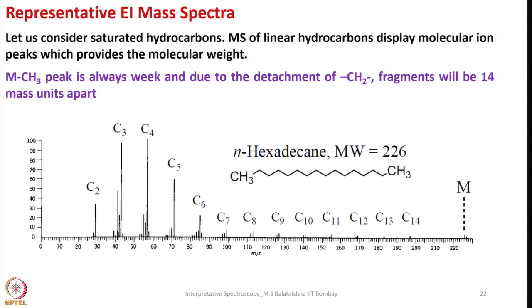Let me show you some representative, important, and simple examples to understand mass spectra of various molecules having different types of functionalities. Let us first consider saturated hydrocarbons. Mass spectra of linear hydrocarbons display molecular ion peaks which provide the molecular weight. The M minus CH3 peak is always weak, and due to the detachment of CH2 fragments, peaks will be 14 mass units apart. You can see regular degradation with a loss of 14 mass units due to the detachment of methylene fragments.